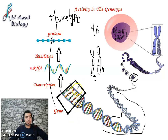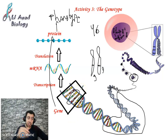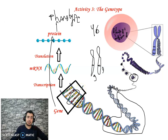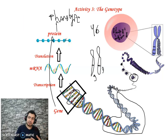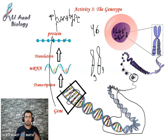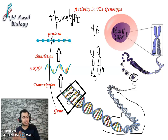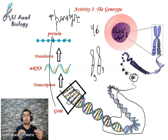What happens if the gene is abnormal? For example, if there is a mutation, the gene becomes abnormal. What happens to the protein insulin? It becomes abnormal. This individual has a problem — a disease called diabetes.